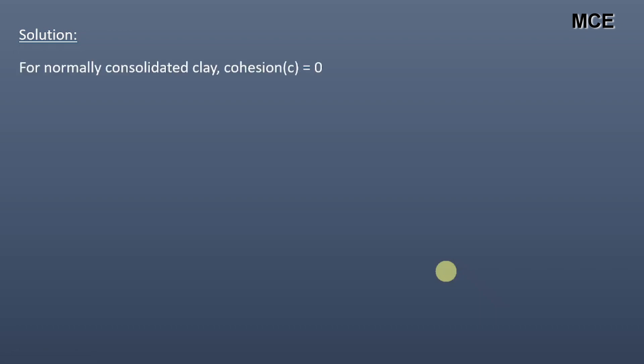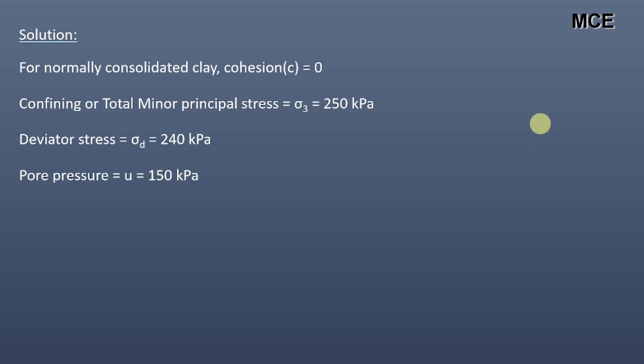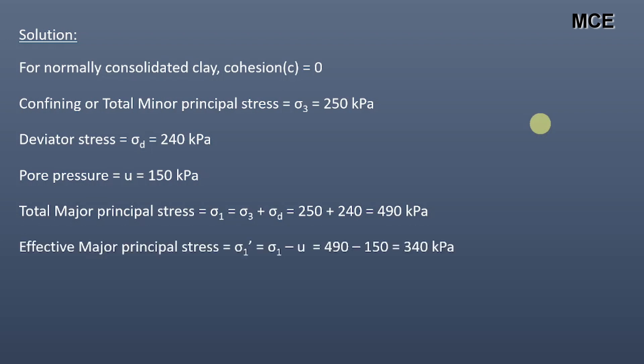First, we will see what we have been given in the question. For normally consolidated clay, cohesion c is equal to zero. Confining or total minor principal stress σ3 is equal to 250 kilopascal. Deviator stress σd is equal to 240 kilopascal. Pore pressure u is equal to 150 kilopascal. Total major principal stress σ1 is equal to σ3 plus σd, which is equal to 490 kilopascal.